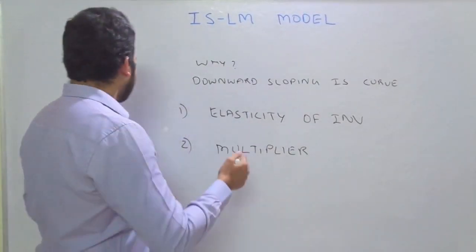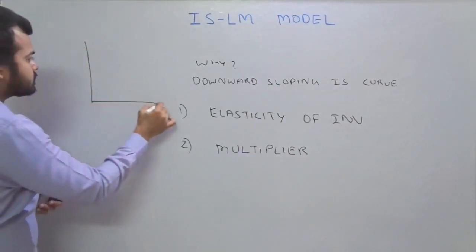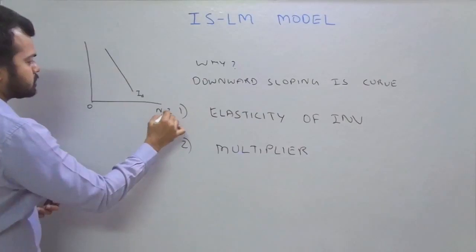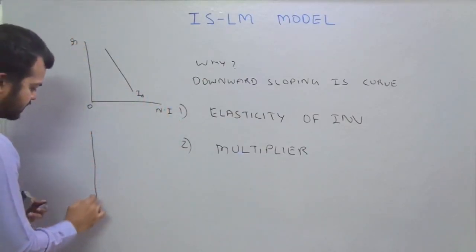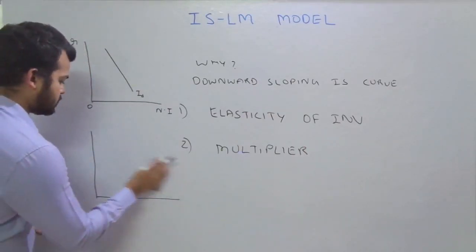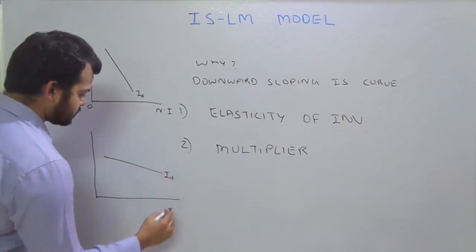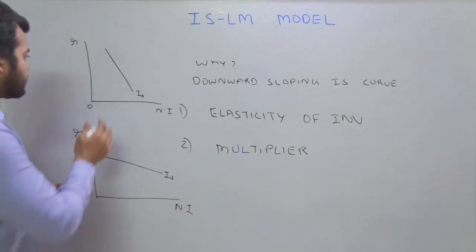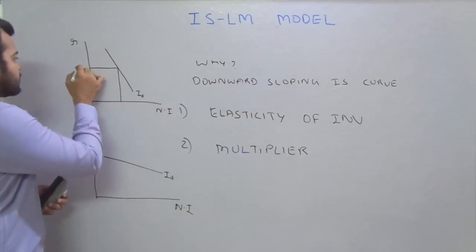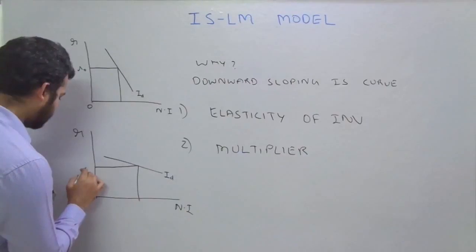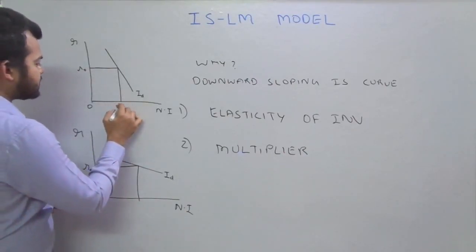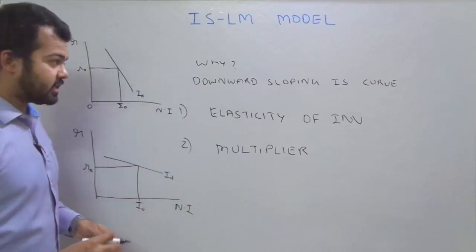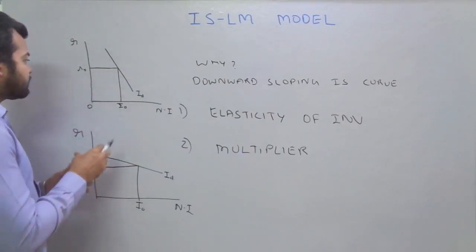For elasticity of investment, we draw two diagrams each with investment demand and rate of interest. In one case the investment demand curve is inelastic — less responsive to changes in rate of interest. When you reduce the rate of interest from R0 to R1, investment increases by only a small amount.